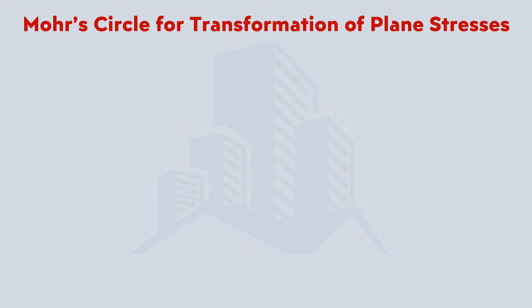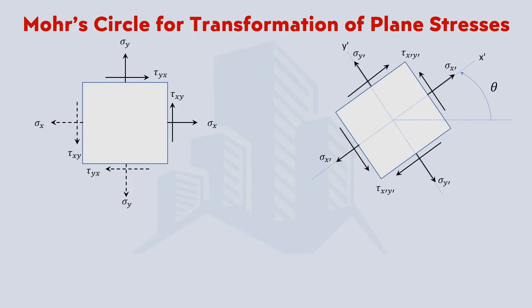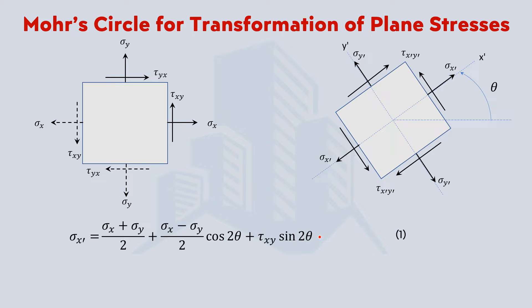Now let's discuss how we can move from equation to graphical form. Let's say that this is the current state of stresses on an element, and later on we want to know the plane stresses at a plane which is rotated counterclockwise by theta angle. If you recall, we have the equations for that — the equation for the normal stress and the equation for the shear stress.